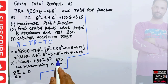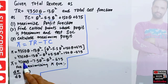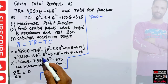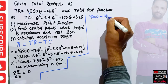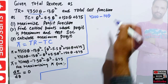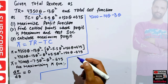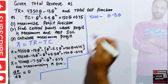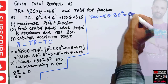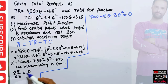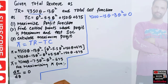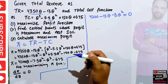Taking the derivative of the profit function: derivative of 4200Q is 4200, derivative of 7.5Q² is 15Q, and derivative of Q³ is 3Q². So dπ/dQ = 4200 − 15Q − 3Q² = 0. We set this equal to zero as the first order condition.